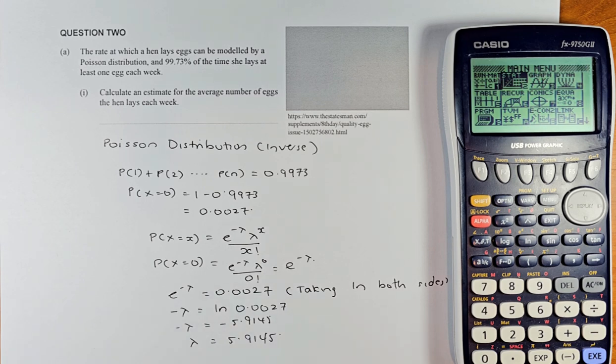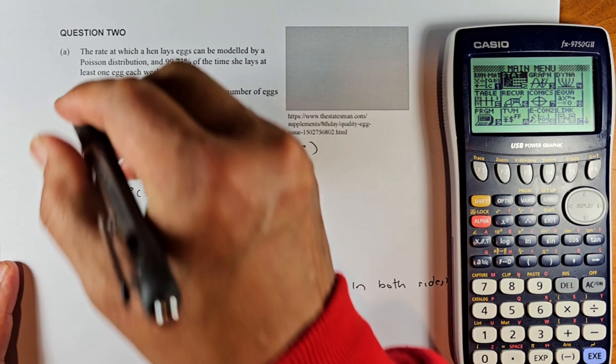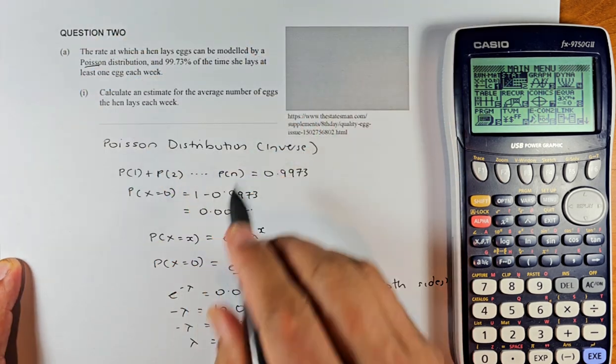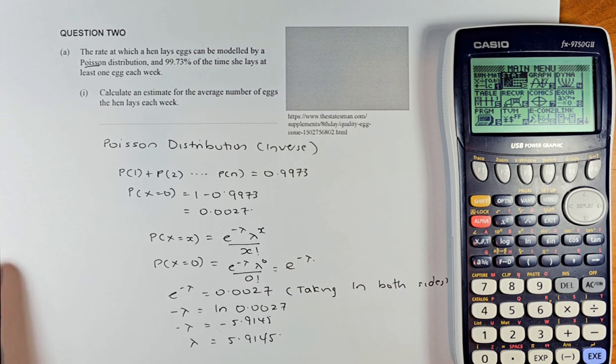So let's read the question. The rate at which the hen lays eggs can be modeled by a Poisson distribution. So they tell you it's a Poisson distribution. And 99.73% of the time, she lays at least 1 egg each week.